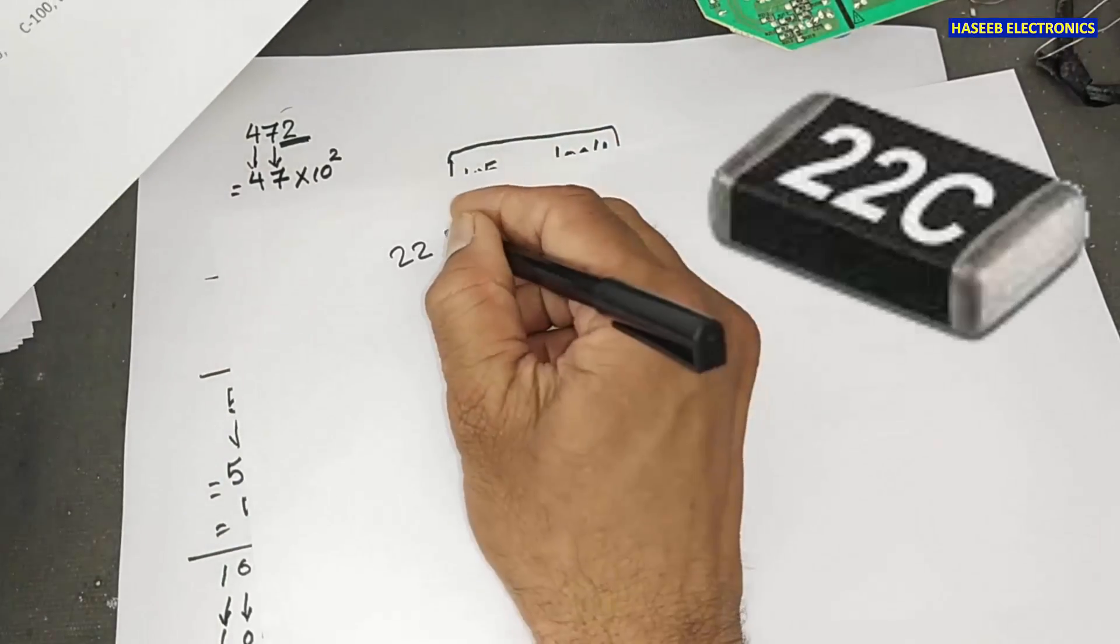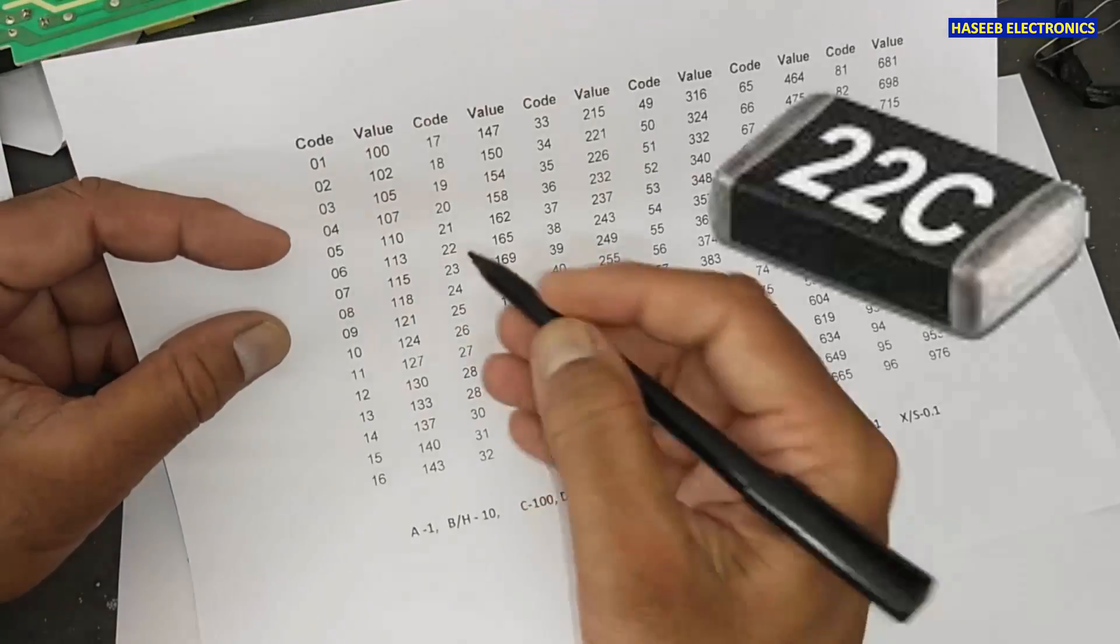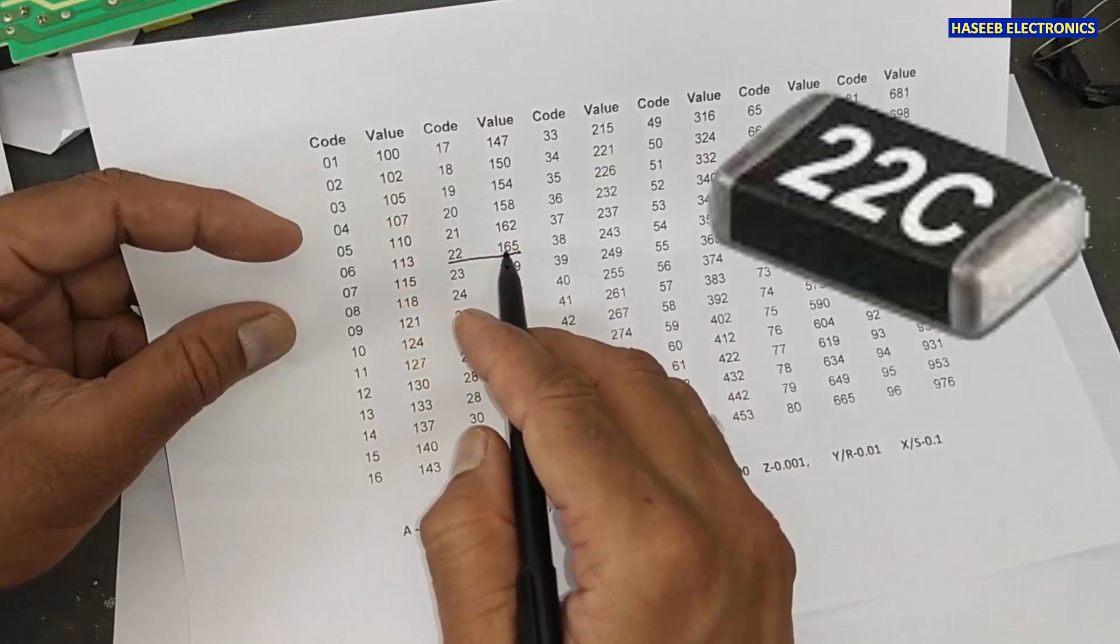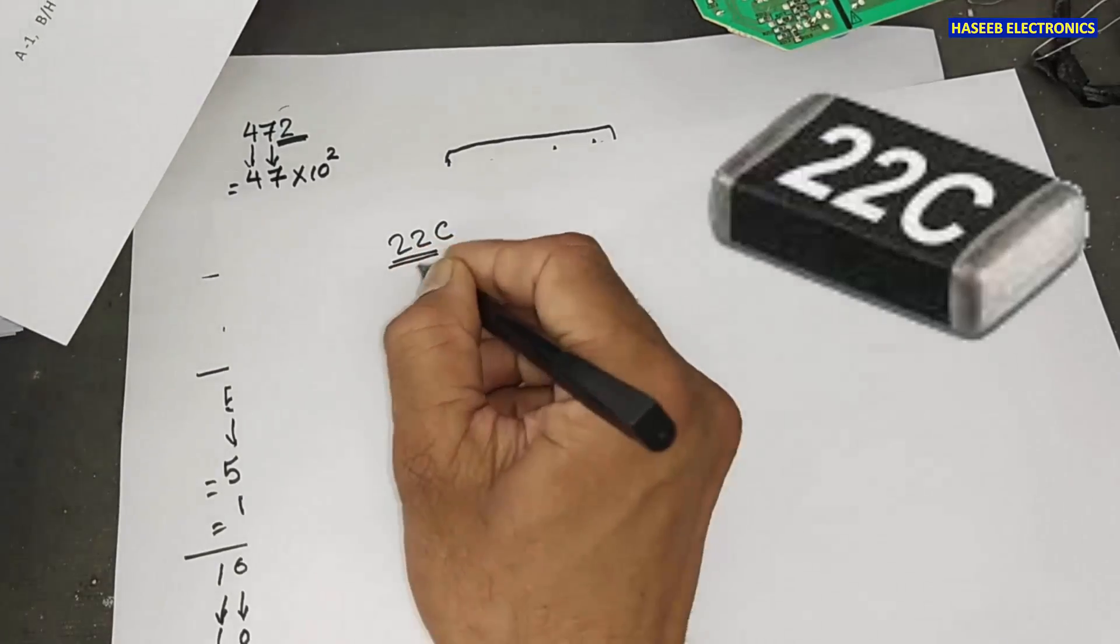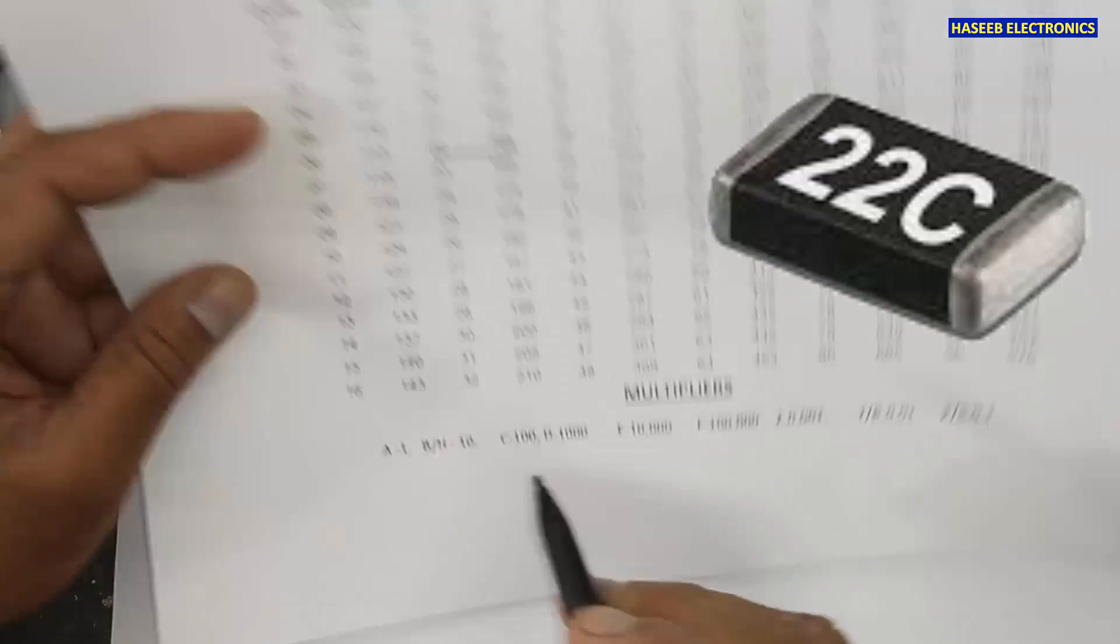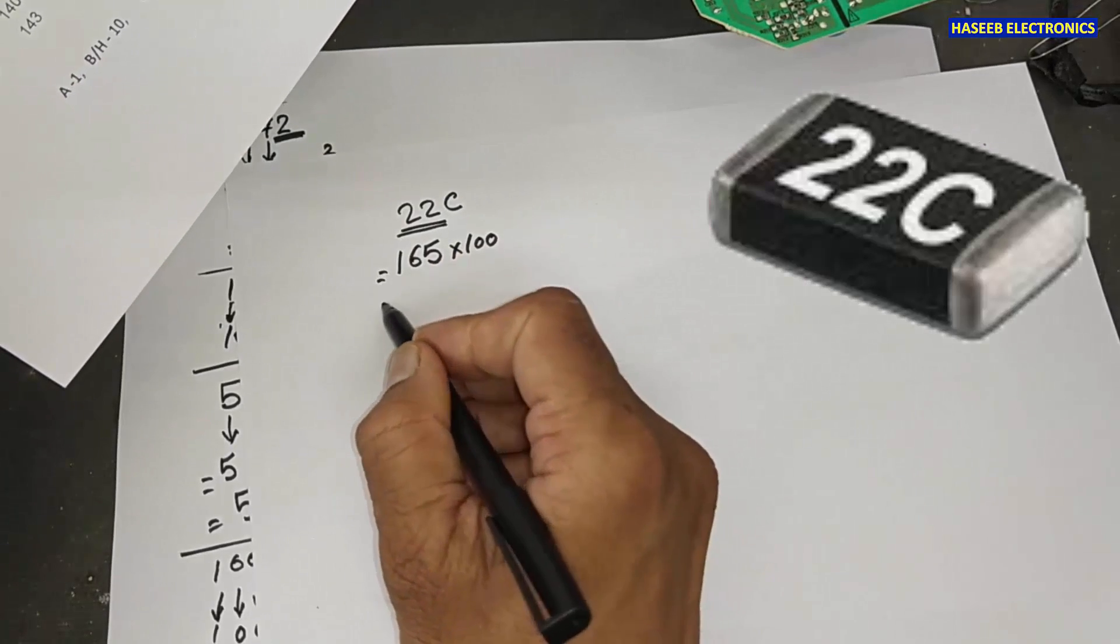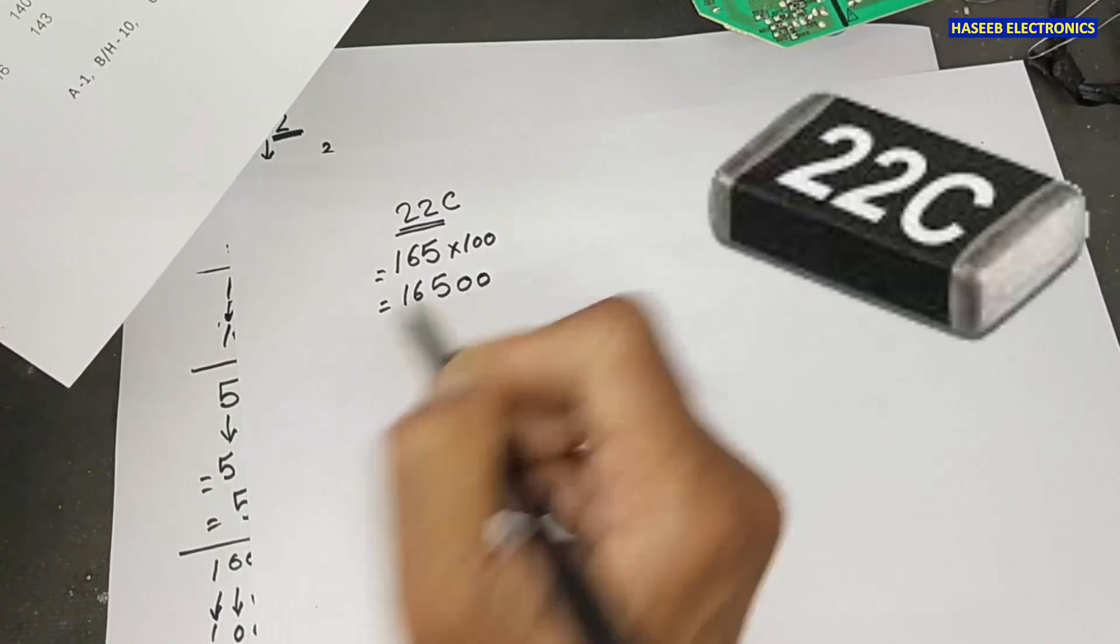For example, if I have code 22C, at that time, I will go to 22. Here, I have 22 and what is the resistor? 165. This 22, 165 and C. C is 100 multiplied by 100. The resistor value will 16500. It is 16.5 kiloohm.